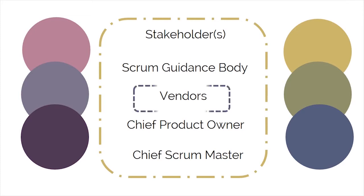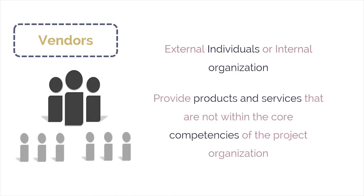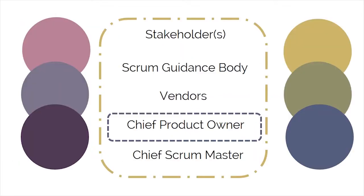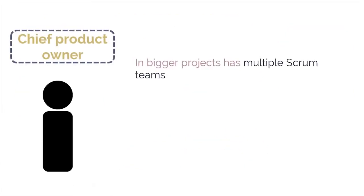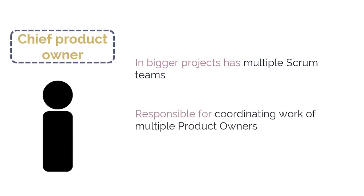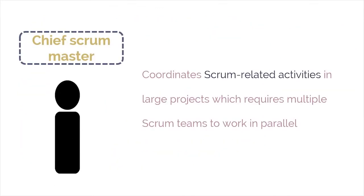The next non-core role is played by vendors — external individuals or internal organizations that provide products or services not within the core competencies of the project organization. The chief product owner is another non-core role relevant for large projects with multiple Scrum teams, responsible for coordinating the work of multiple product owners. The last non-core role is the chief Scrum master, who coordinates Scrum-related activities in large projects that may require multiple Scrum teams to work in parallel.